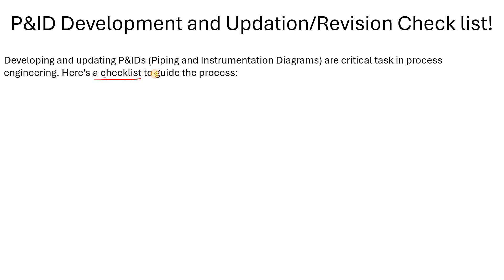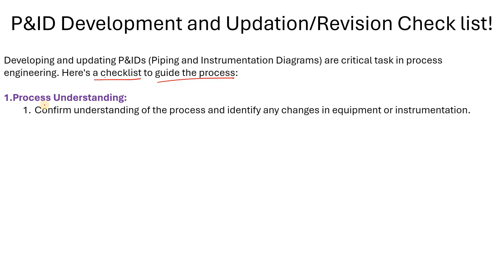So what is the checklist — to guide the process or to guide the draftsman while preparing the P&IDs? The first item is process understanding. While preparing, developing, or revising the P&ID, your process understanding is a must. If you have a better understanding of the process, only then can you revise, update, or develop the P&ID. Please confirm your understanding of the process, read the process description, identify any changes in equipment or instrumentation, check the proper loop, and also study the PFD or BFD.